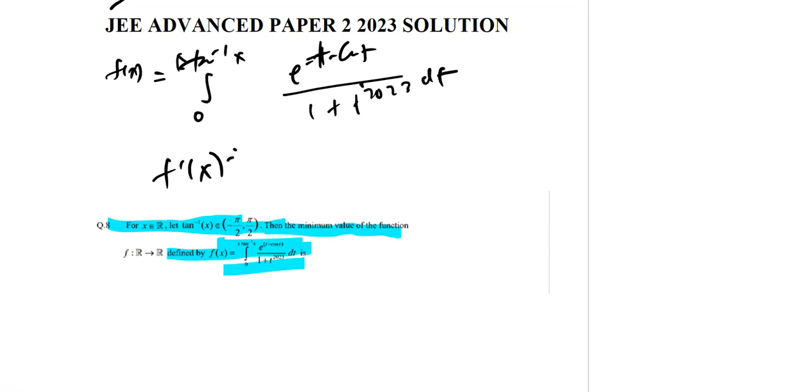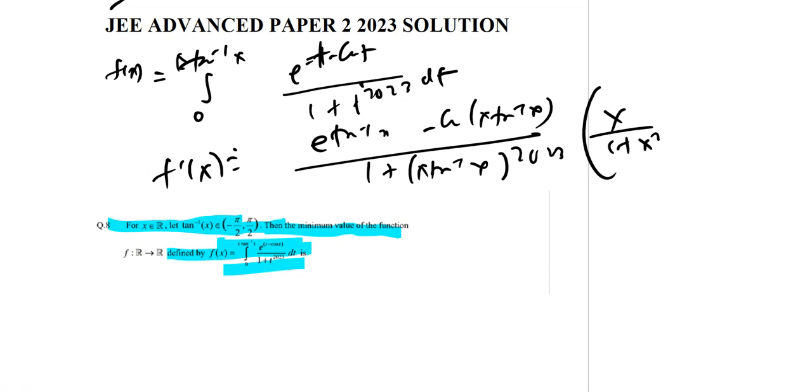f'(x) here will be e to the power tan inverse x minus e to the power x tan inverse x, 1 plus x tan inverse x to the power 2, 0 to x, which gives x by 1 plus x squared plus tan inverse x.